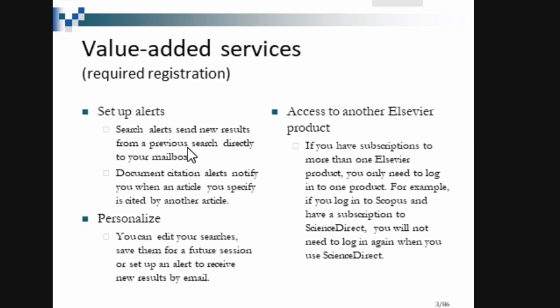These are value-added services, similar to what we saw in Web of Science. When you register, you can access EndNote, master journal search, and similar tools. You can set up alerts and save searches. Similarly for Scopus, if you register, you can access other Elsevier products as well. Note that Scopus is not free — it is a paid subscription database. When you register, you get these kinds of value-added services.